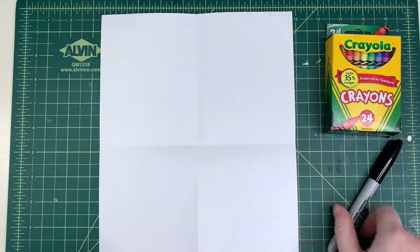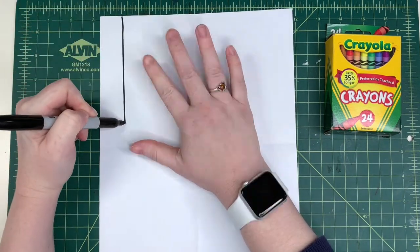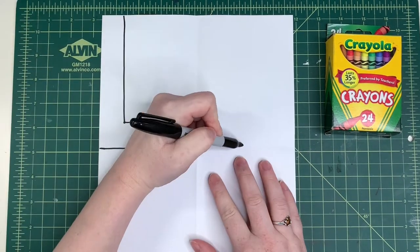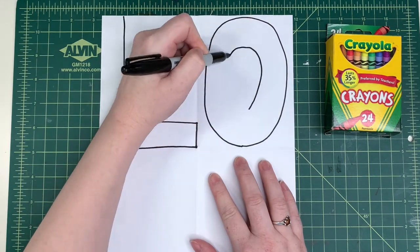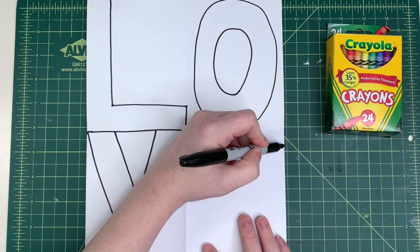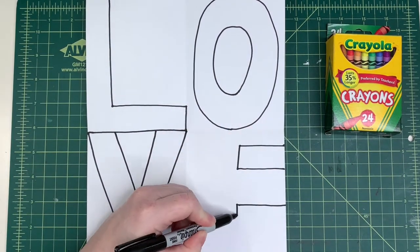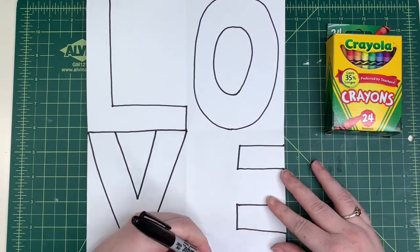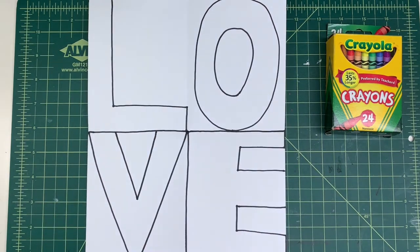Now you can use a pencil if you want, but I'm going to use my marker. Go down and over for the L. Make two circles for the O. A big V and a little V. And then instead of making an E, make these two rectangles and then go around the edges. That's it.